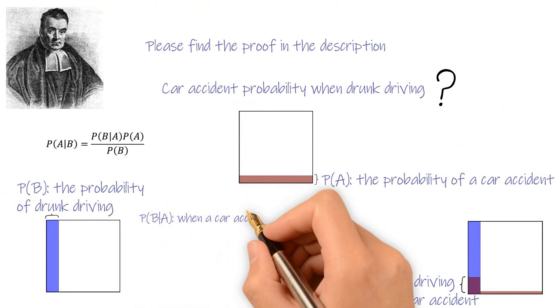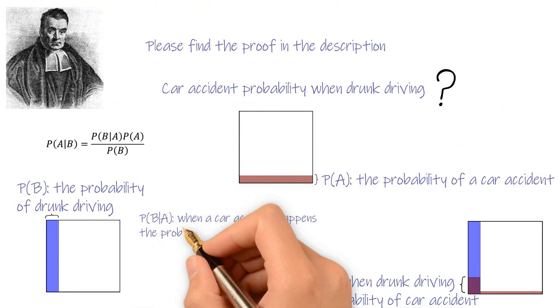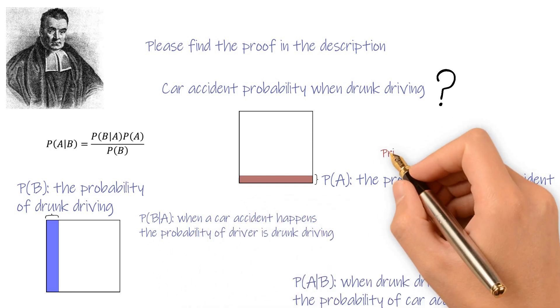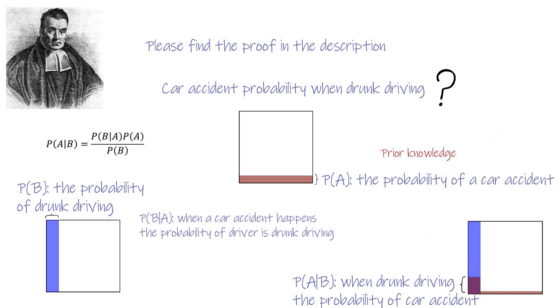P(B|A) is when car accident happens, the probability of drunk driving. Probability of car accident is based on prior knowledge. The initial value is not important. The crucial part is iteration, and more information leads to more reliable base probability.